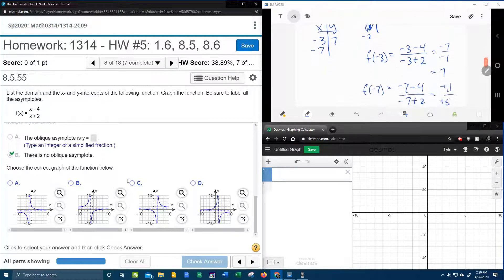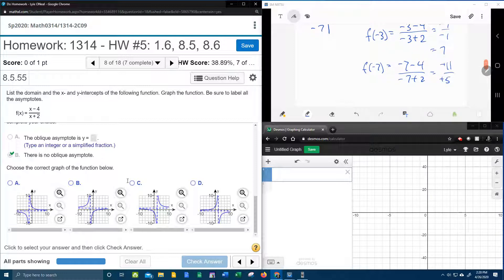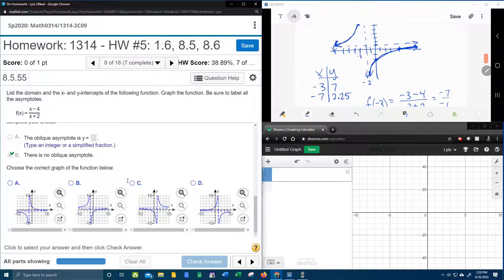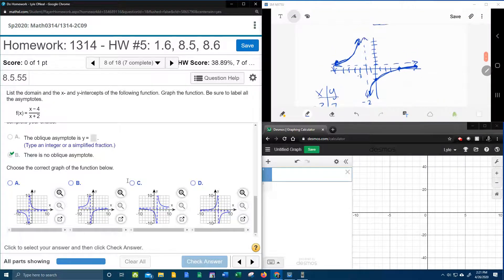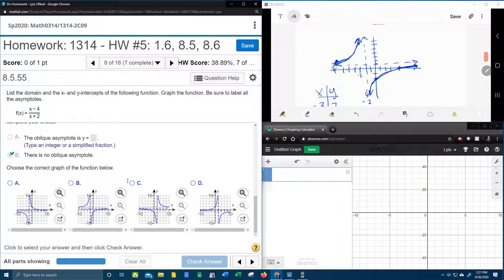And 11 fifths is a little bit more than 2. So let's see, what is that 2.25? You can use your calculator if you want to check that. So at negative 7 we're going to be at 2.25. So something about here, something like that. Yeah, so that shows that I'm pretty close.